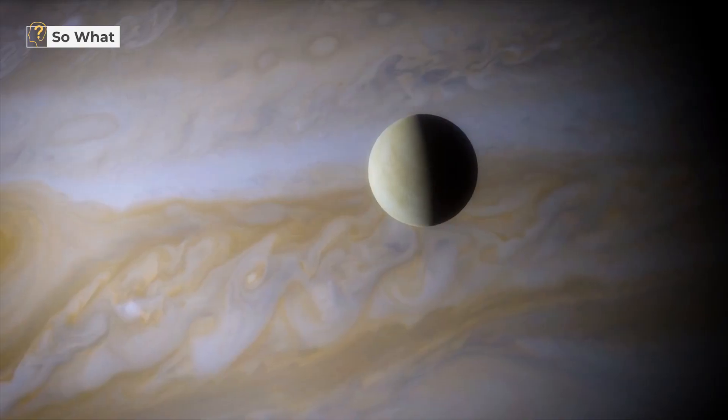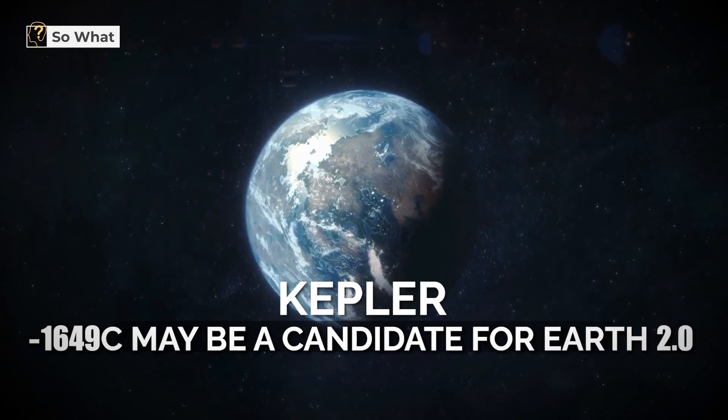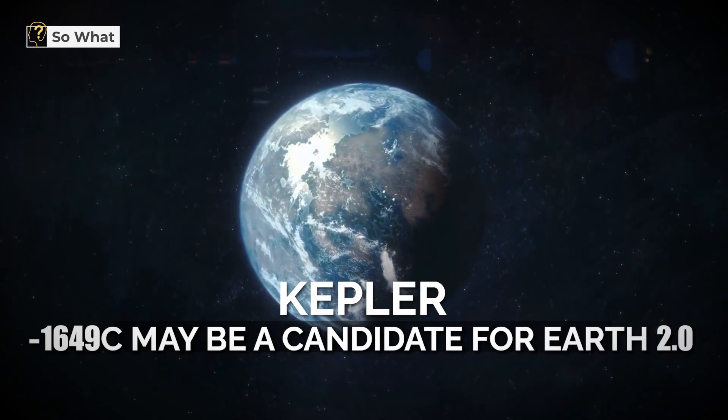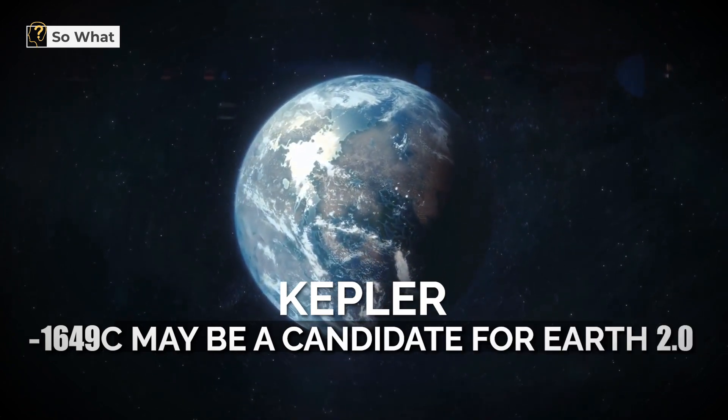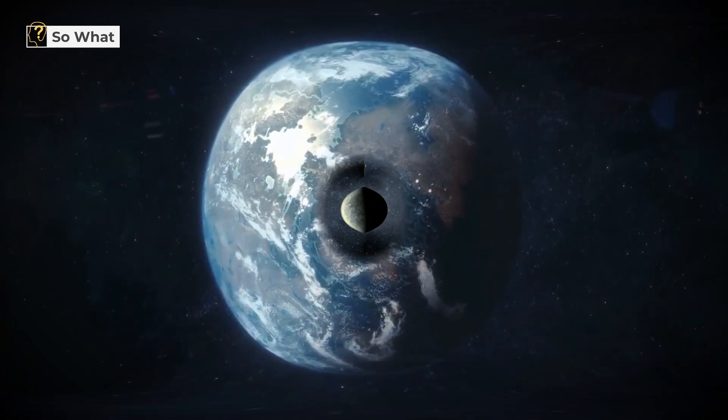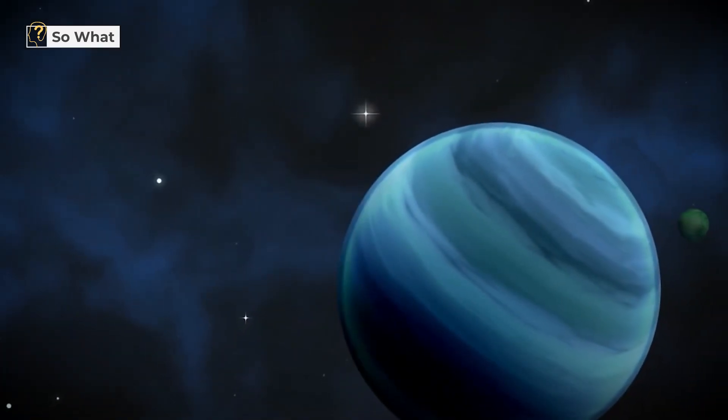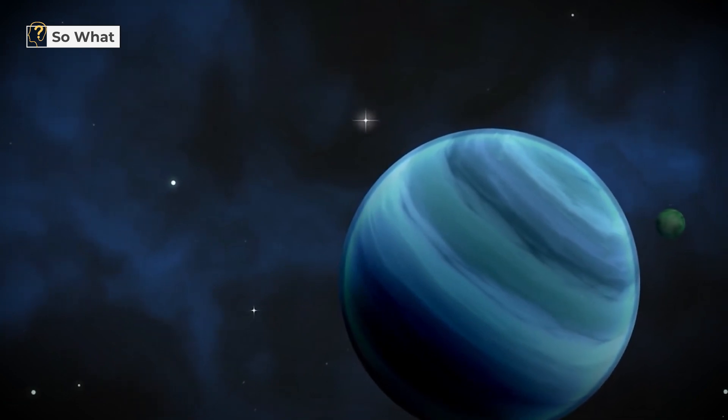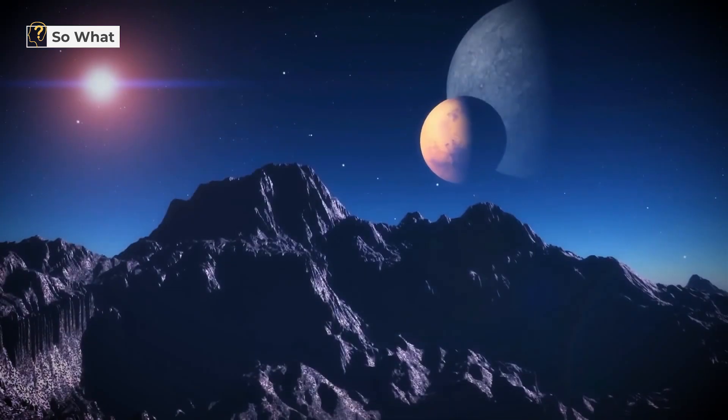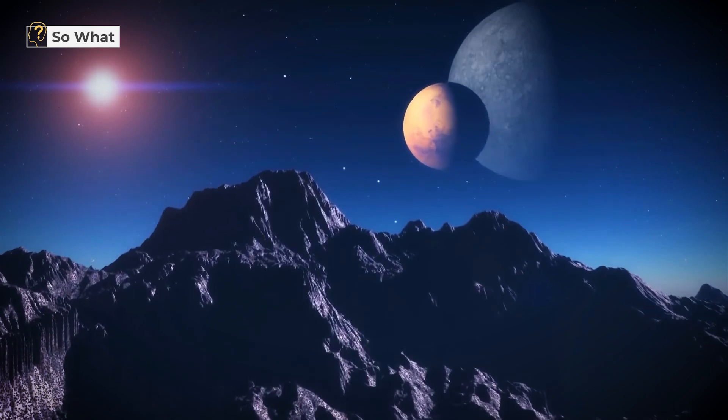Is there any exoplanet out there that meets these criteria? I discovered a planet that could be livable. Kepler-1649c may be a candidate for Earth 2.0. It circles a red dwarf star 300 light years distant. It receives sunlight, but only 75% of that received by Earth. As a result, it can be a little colder there.